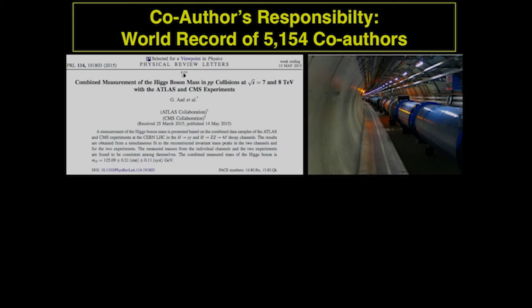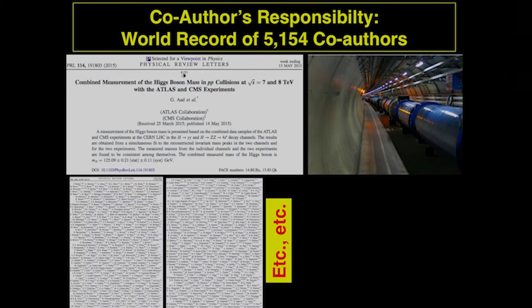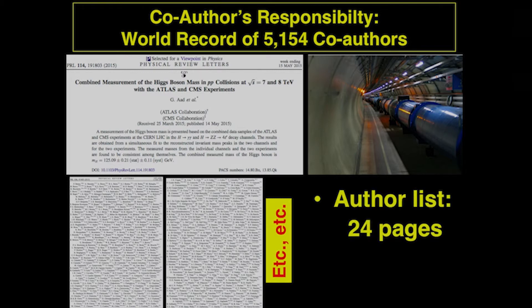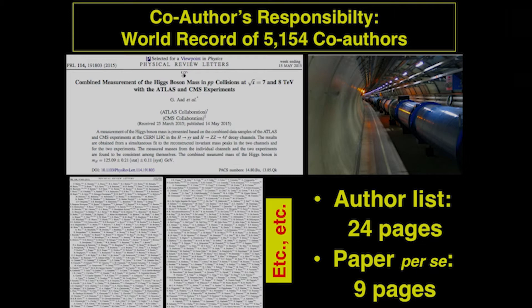Now I want to discuss co-author responsibility, which is often linked to scientific misconduct. Here is a world record: a paper published in Physical Review Letters — a very good journal — had 5,154 co-authors. The author list alone consists of 24 pages, while the main text of the paper is only nine pages long.